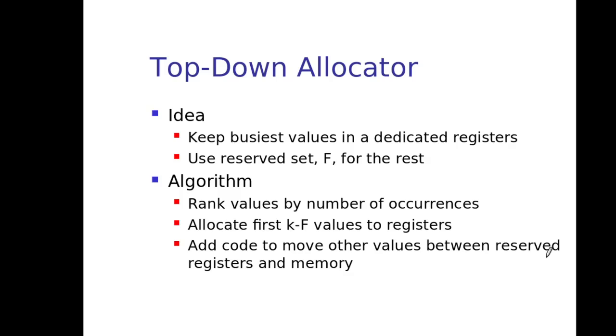Top down allocator means we keep the busiest values in a dedicated register. We assume how they are being allocated. We keep the busiest value, busiest means frequently required values in a dedicated register. And we have several general purpose registers F. We can use them for other purposes, other non-frequent uses.